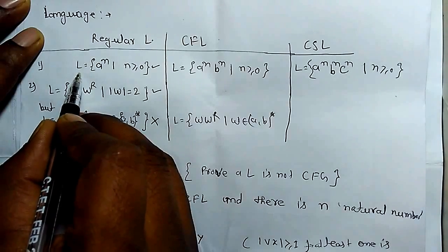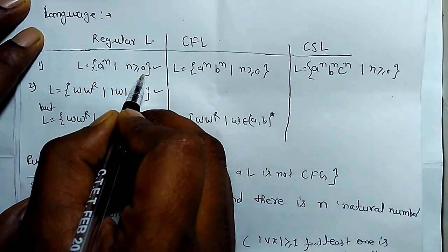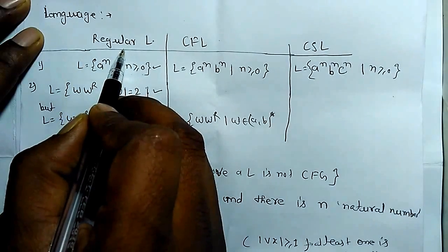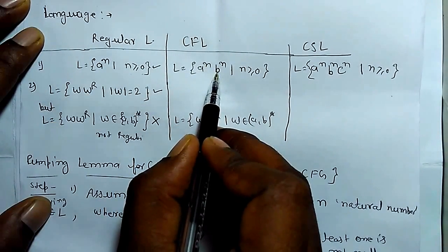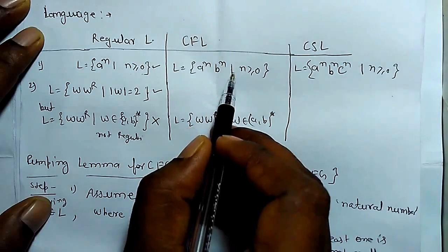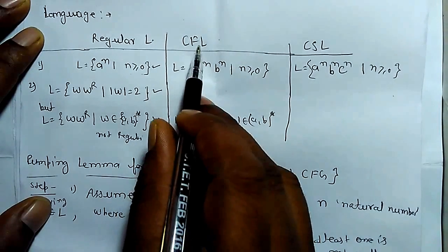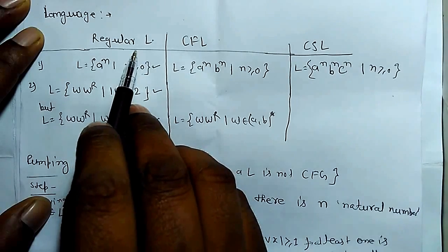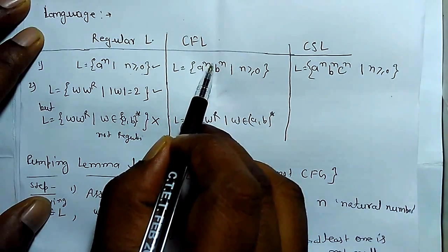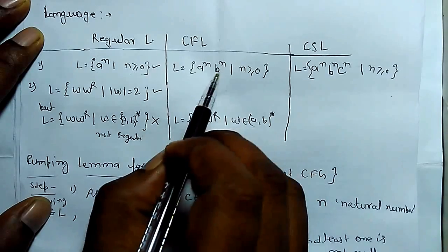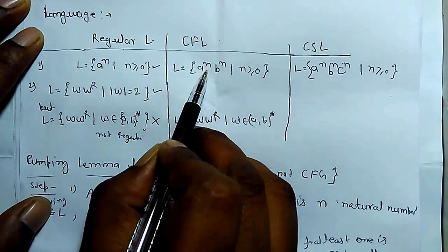If a language is L = {a^n | n ≥ 0}, then this language is a regular language. But if a language is {a^n b^n | n ≥ 0}, this is a context-free language but not a regular language.